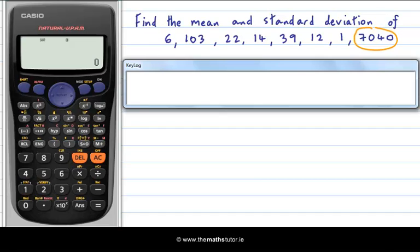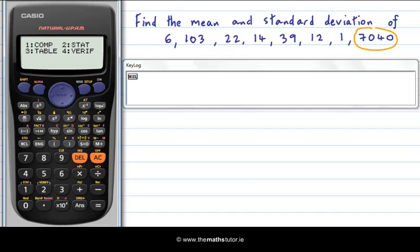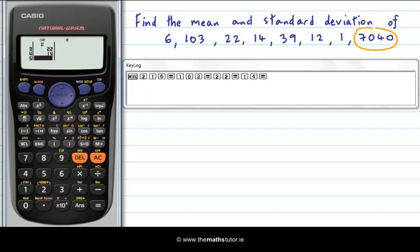First of all, we need to enter our data. We need to hit mode and then select number 2 for stat. And this brings up this list of which we want number 1. And that allows us to enter our data. So we start with 6. Don't forget the equals. 103 equals 22 equals 14 equals 39 equals 12 equals 1 equals and our outlier 7040 equals.